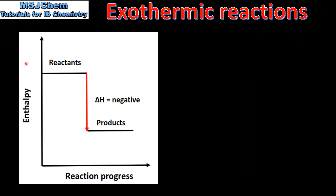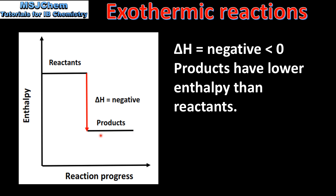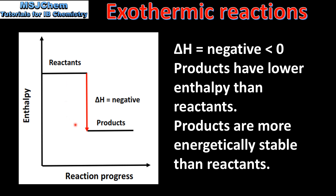Next we look at an enthalpy level diagram for an exothermic reaction. The delta H — that's the change in enthalpy — is negative or less than zero. The products have lower enthalpy than the reactants, and the products are more energetically stable than the reactants.